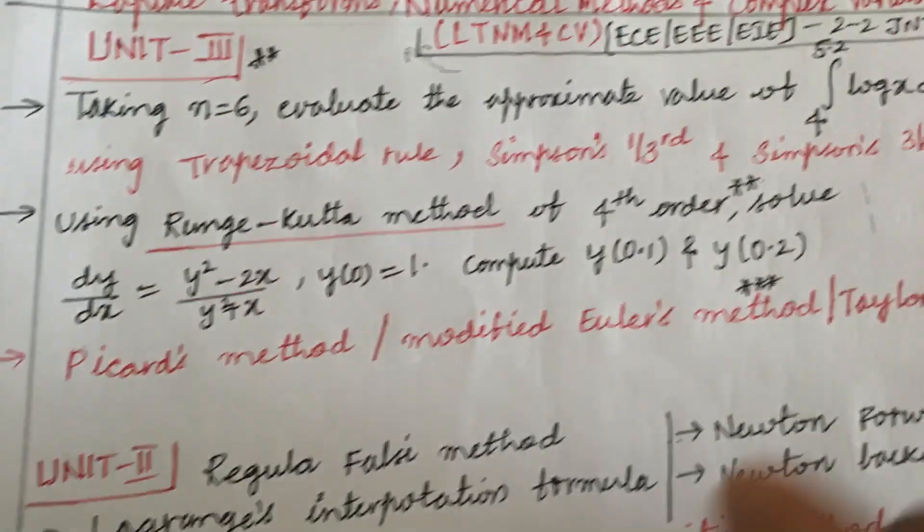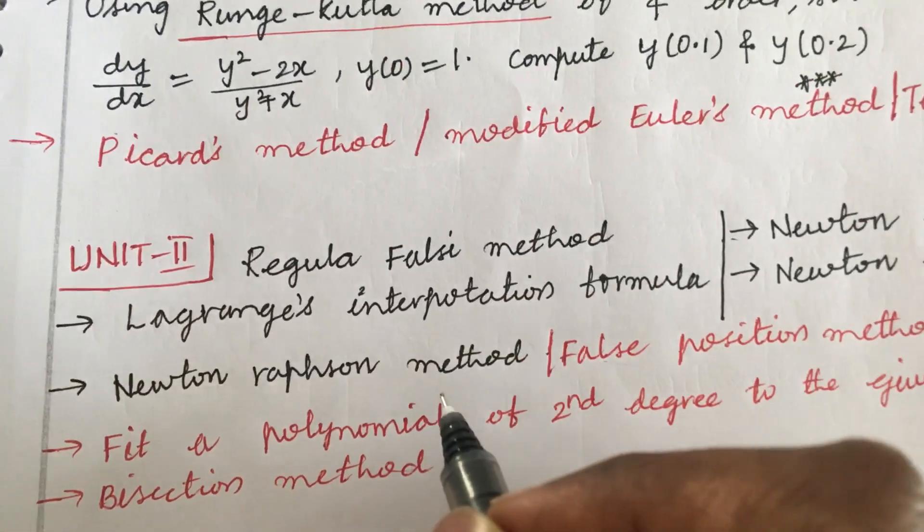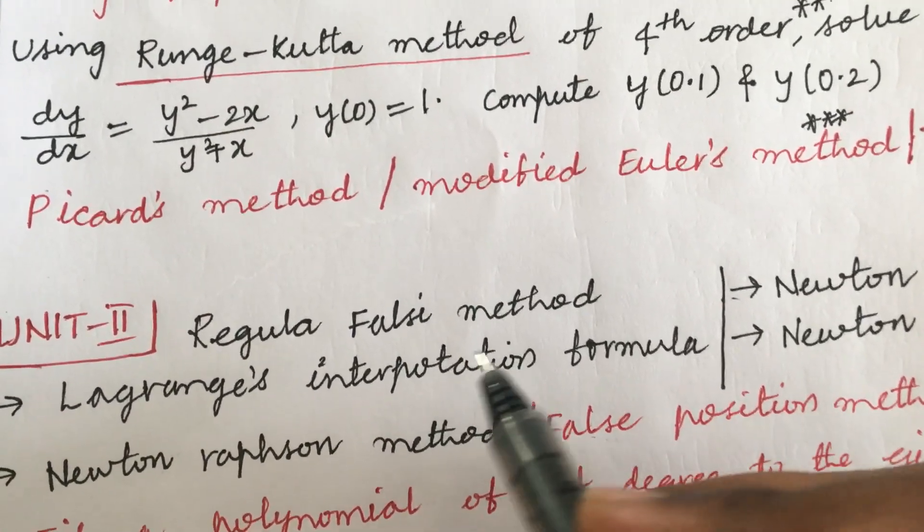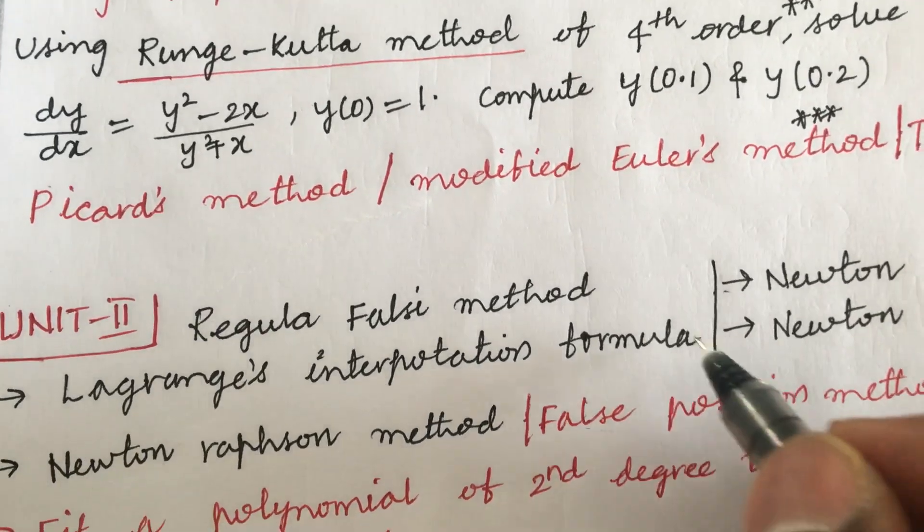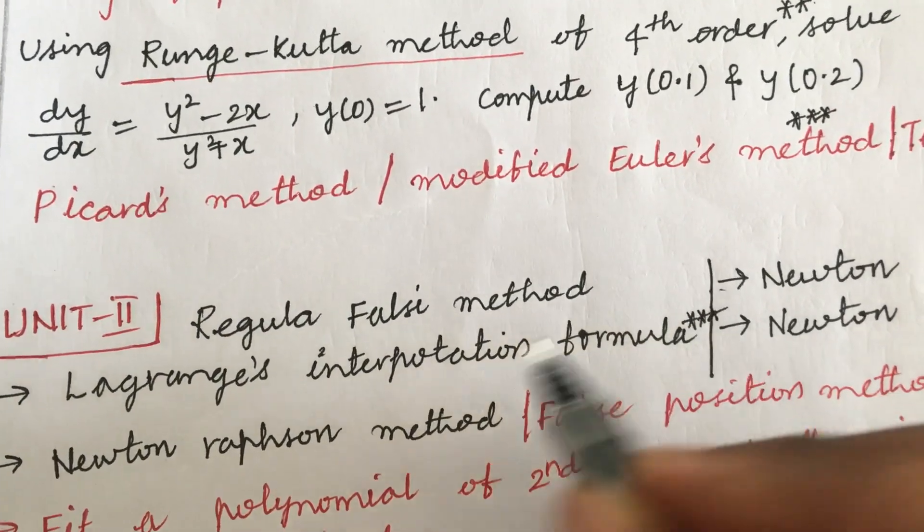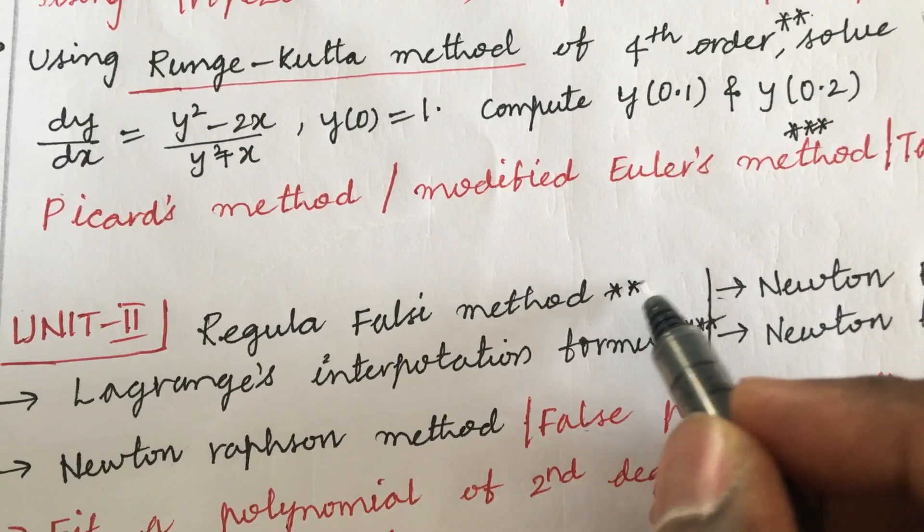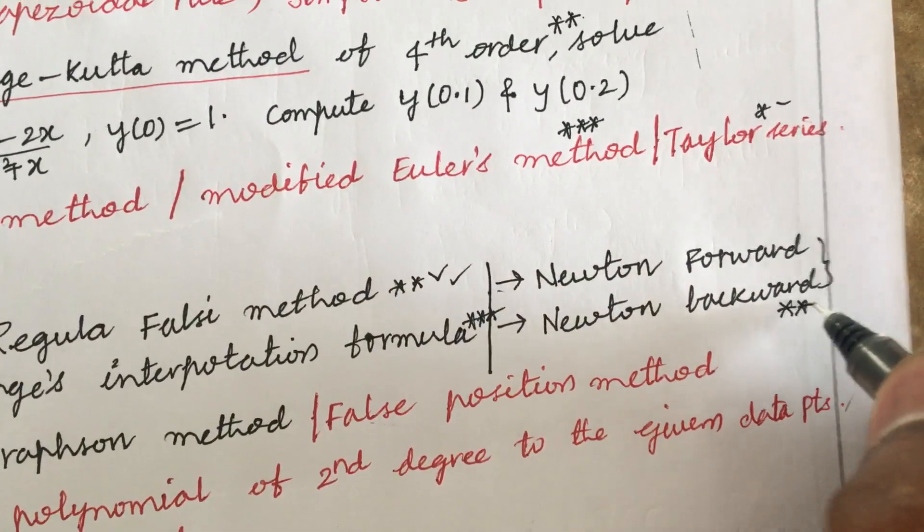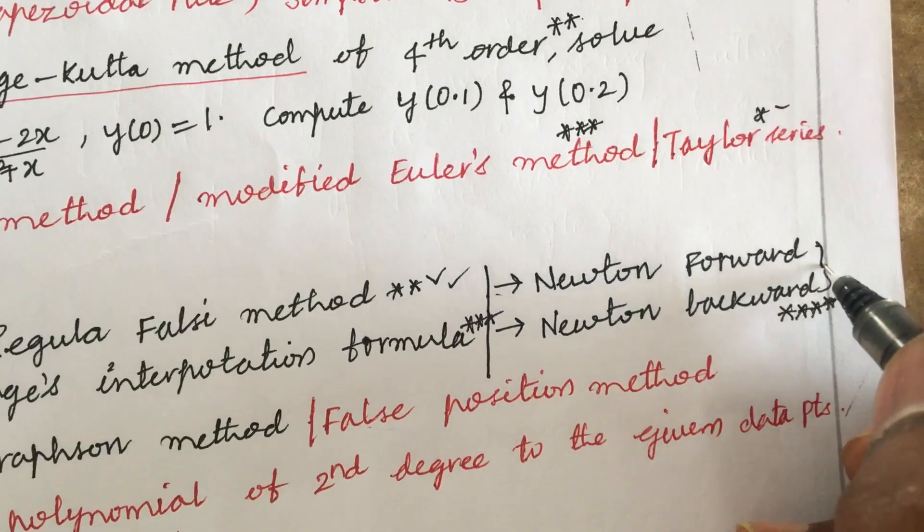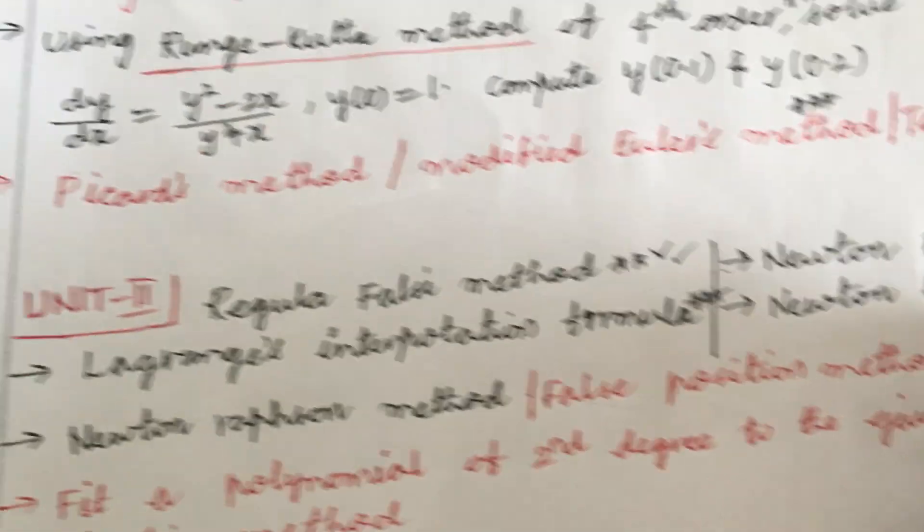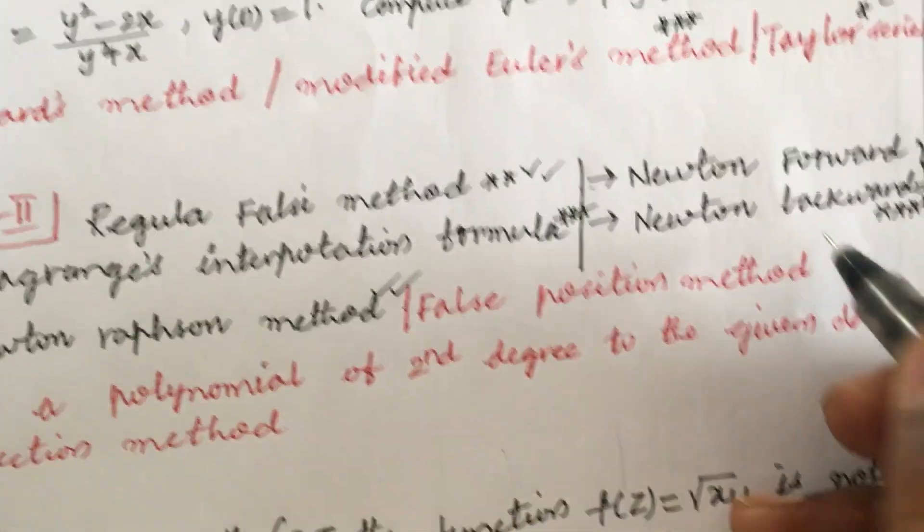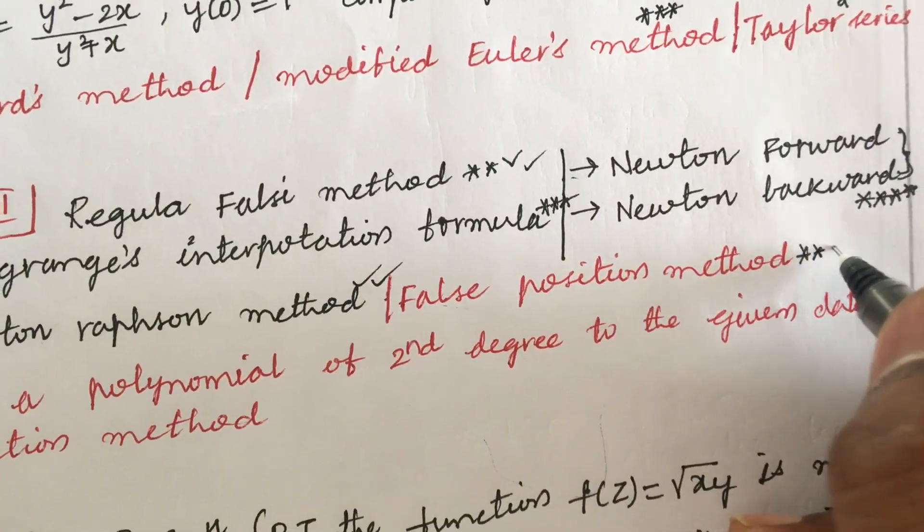Students need to work out the second unit. Lagrange interpolation formula is set to be the very very important question and Gauss elimination method is also set to be the top most question. Newton forward as well as Newton backward methods formulas and the problems need to be worked out. They will be asking the differences in the short questions. Newton-Raphson method is also set to be the top most question.